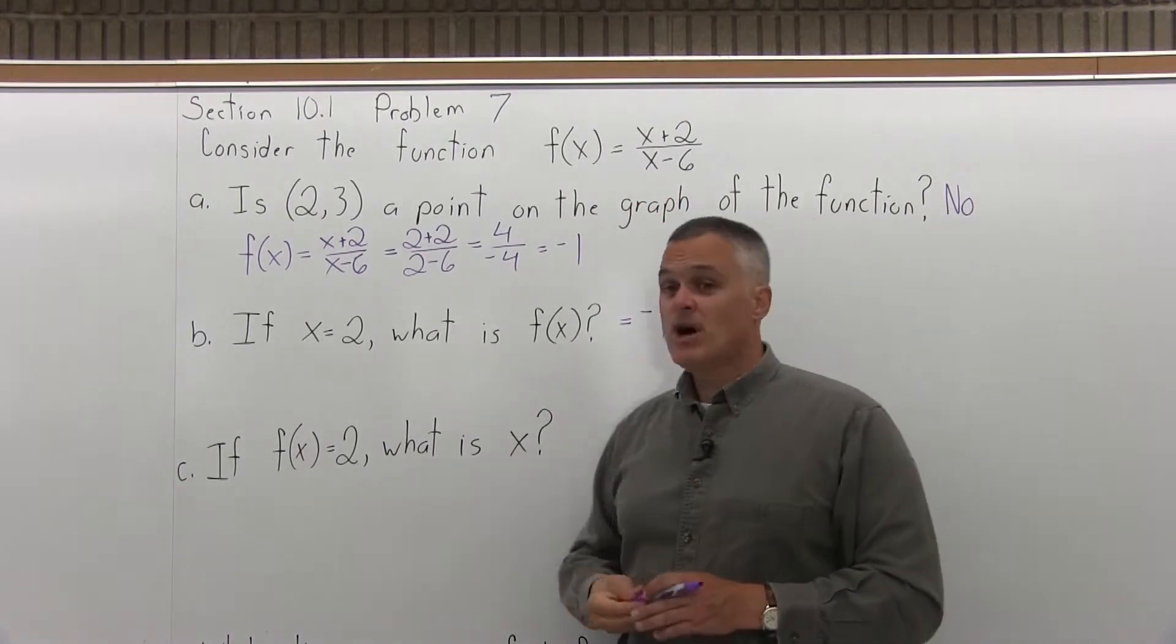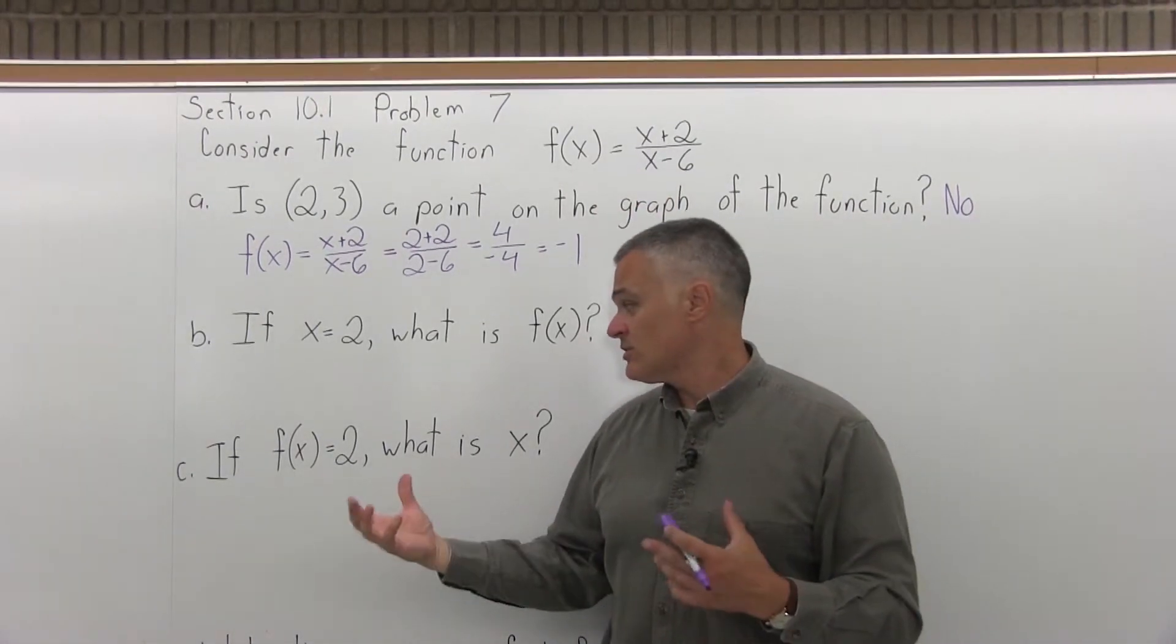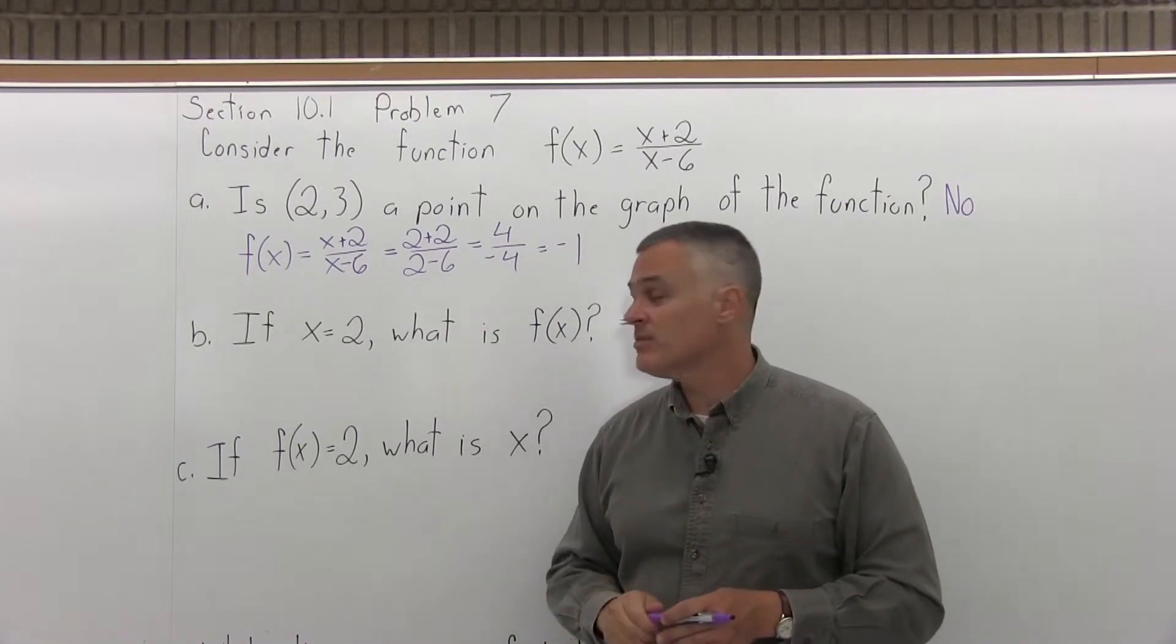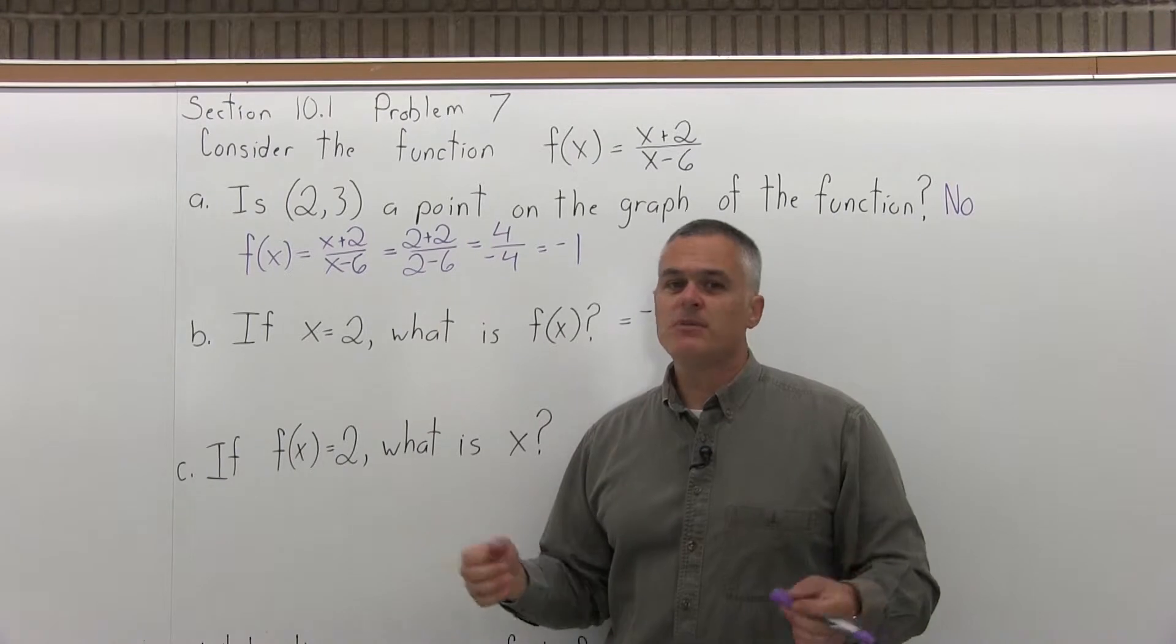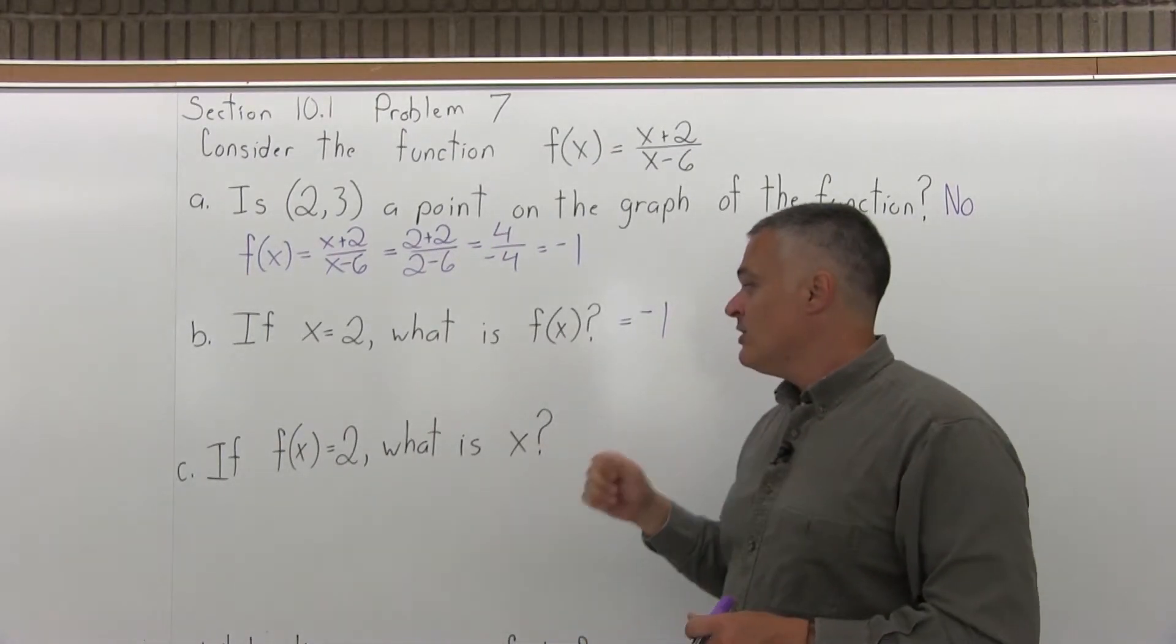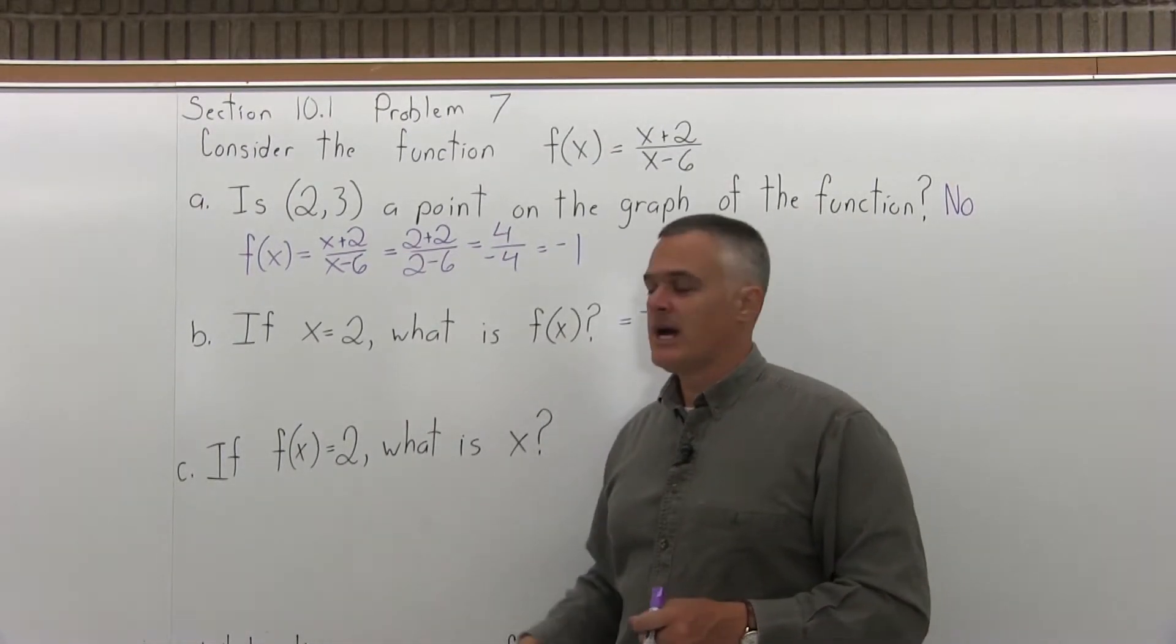So we have a couple of options. We could just try a variety of inputs with trial and error. You could probably see what you'd have to put in to get out a 2 in maybe 10, 15 minutes. But you can get it much quicker if you use a little bit of algebra.